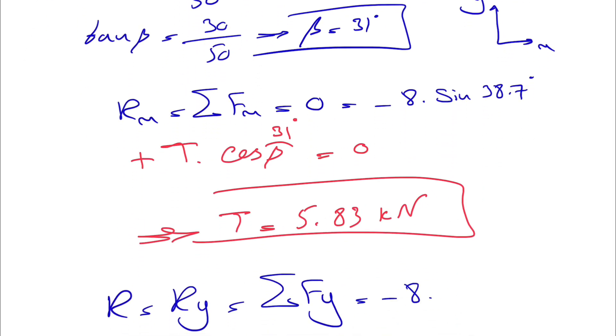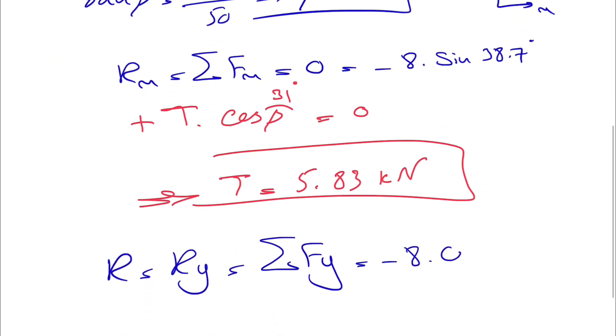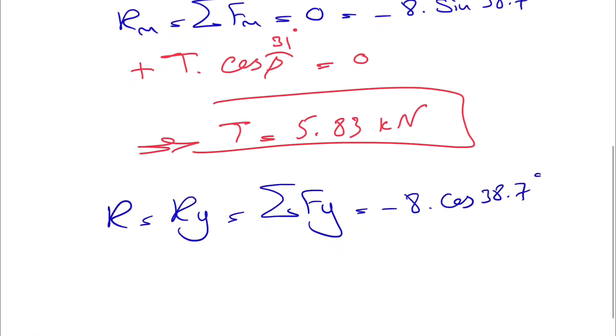times cosine of alpha, so cosine of 38.7 degrees. And we have minus TAC, which is 5.83, times sine of beta, which was 31 degrees.